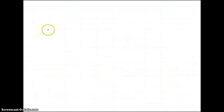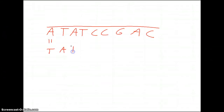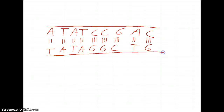Let's draw this really big. Our original strand is A, T, A, T, C, C, G, A, C — with the sugar phosphate backbone held together by phosphodiester bonds. Across from this we would have T, A, T, A, G, G, C, T, G, with two hydrogen bonds for A-T pairs and three hydrogen bonds for C-G pairs, and the sugar phosphate backbone running along the other side. The first thing DNA polymerase does is unzip the molecule, breaking those hydrogen bonds so the strands separate.